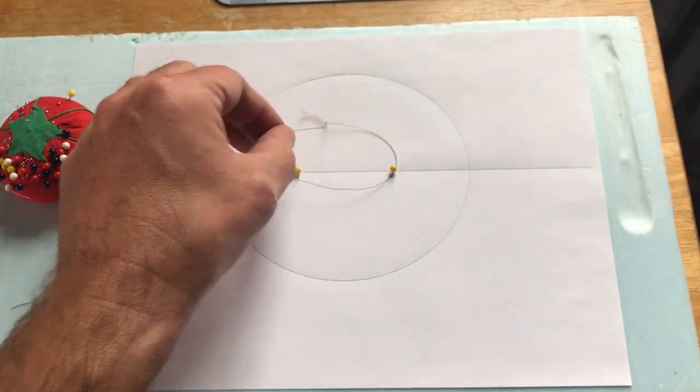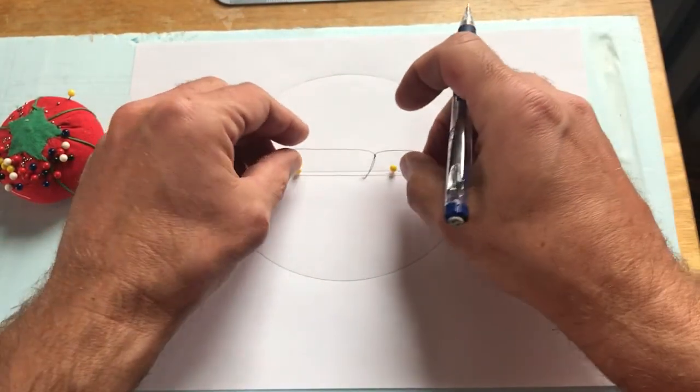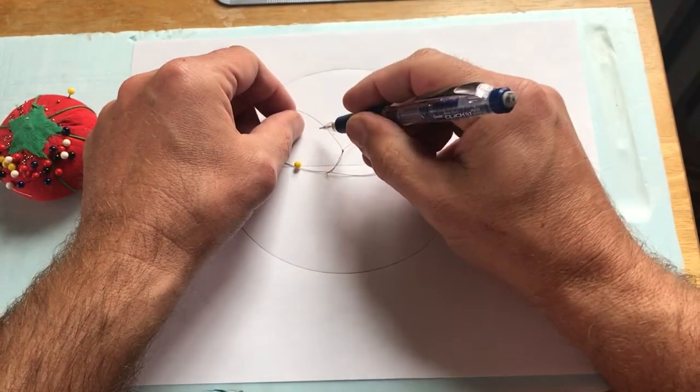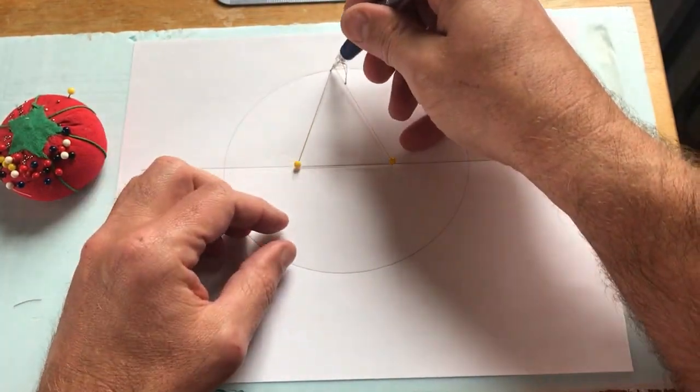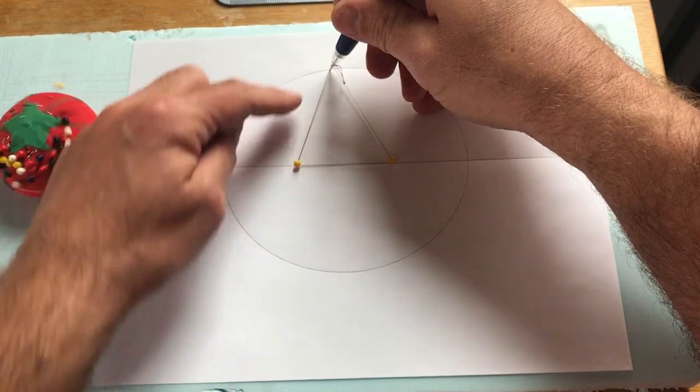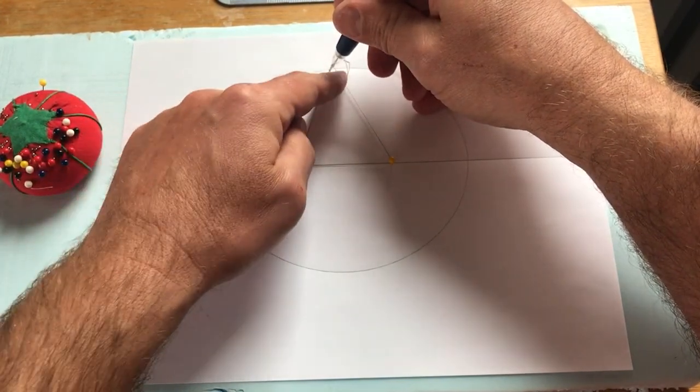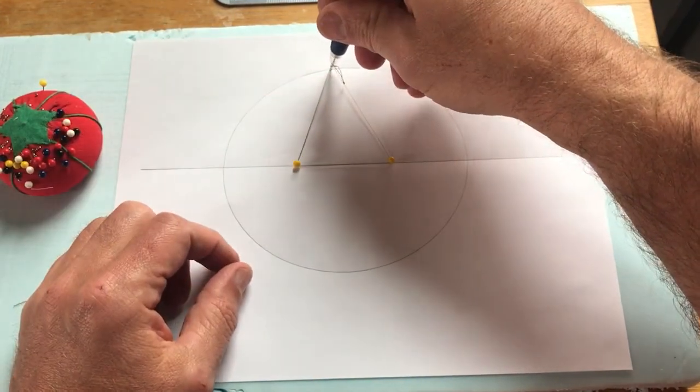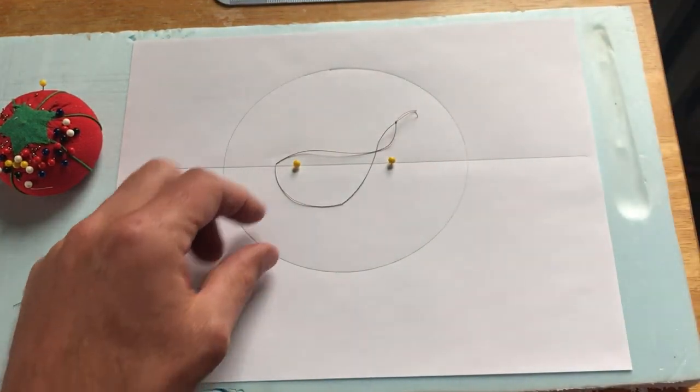Now you could look up the definition of an ellipse, but any point along that ellipse is equal to the sum of this side plus that side. And since that remains constant the whole way around, we get an ellipse.